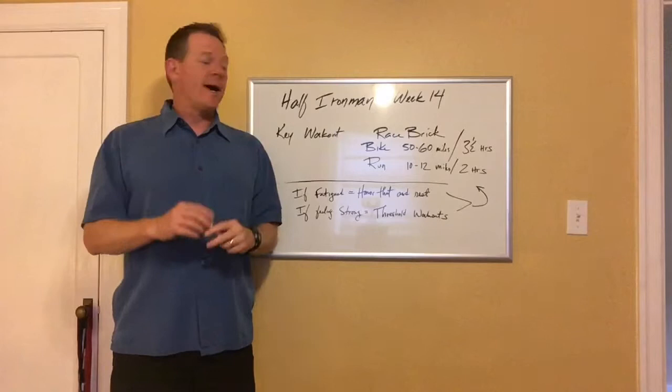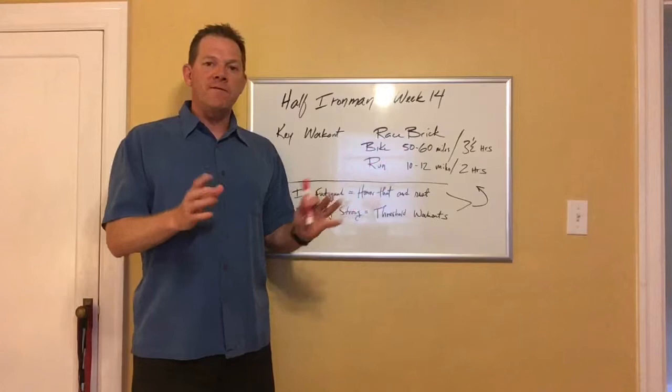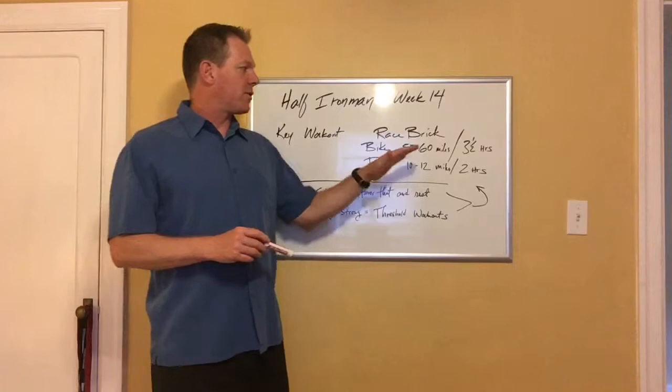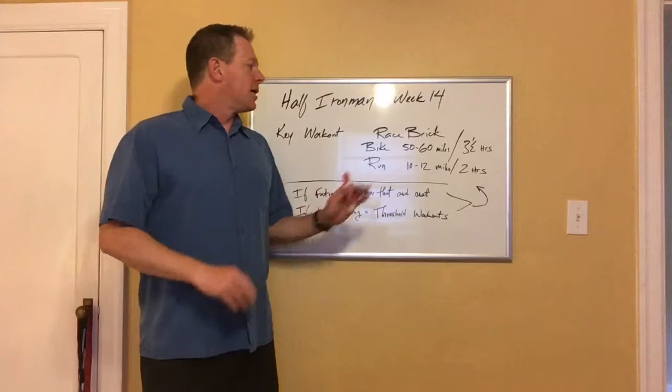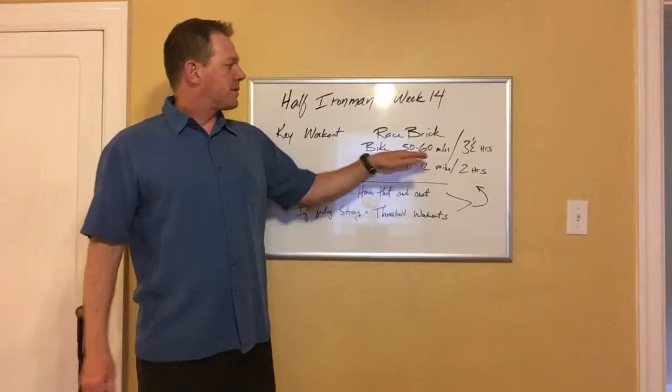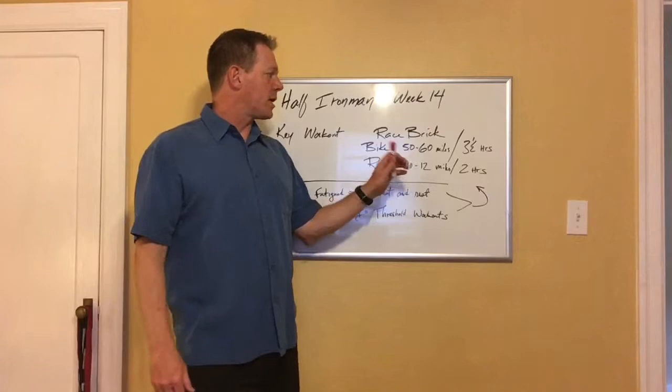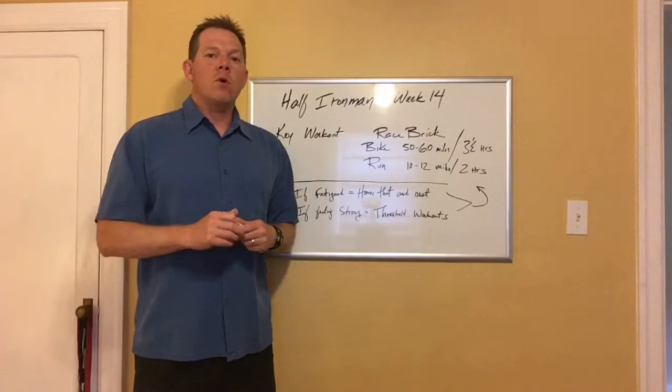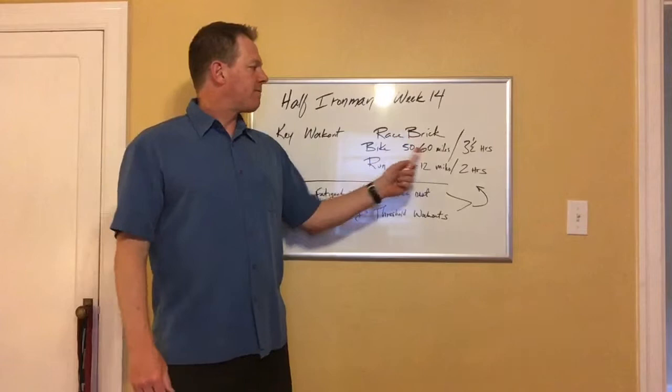This week there's one key workout, and that is the big race brick. Ideally I'd like to see you go between 50 to 60 miles on the bike, three and a half hours. Wherever you fit within those parameters, if you can get in 60 miles in under three and a half hours great. If you're at say 49 miles and that's three and a half hours, stick to three and a half hours. Somewhere in that range, ideally at least a 50 mile bike ride followed by a 10 mile run for people looking to finish. If you want to be more competitive, try to get in the 60-12 as the maximum for this workout.